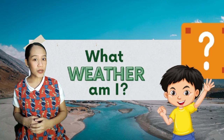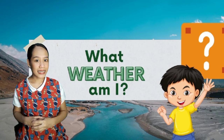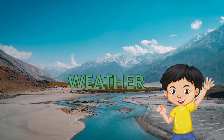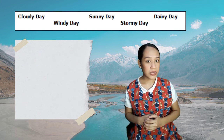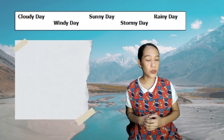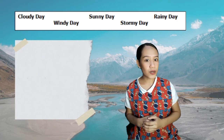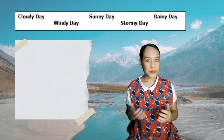Before we start with our lesson proper, let us have an activity first entitled 'What Weather Am I?' You are to identify what type of weather is being shown in the picture and choose your answers inside the box. Are you ready? Let's begin.